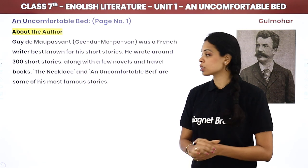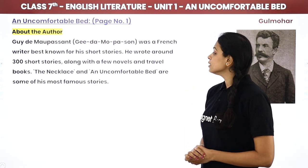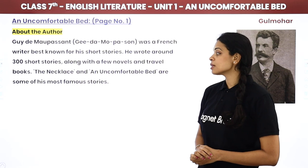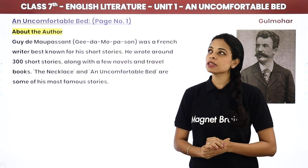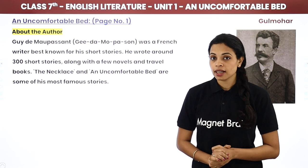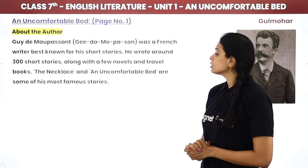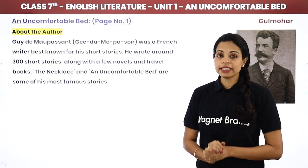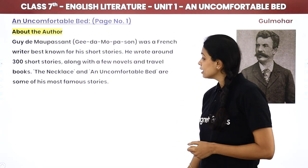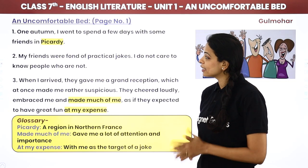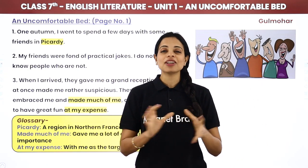He also wrote some travel books. 'The Necklace' and 'An Uncomfortable Bed' are some of his most famous stories. I think 'The Necklace' is part of Class 10 — it's a wonderful story. Before we start, let me give you a small introduction.